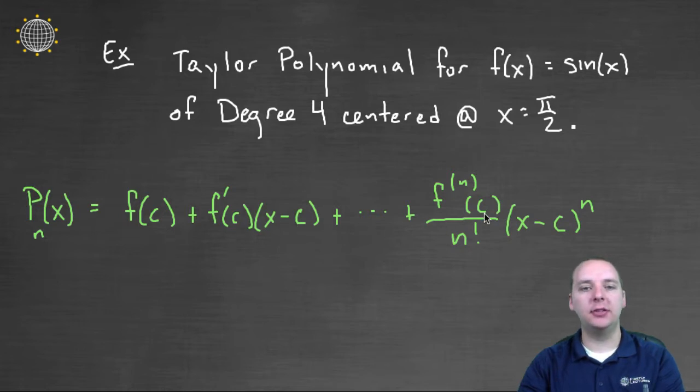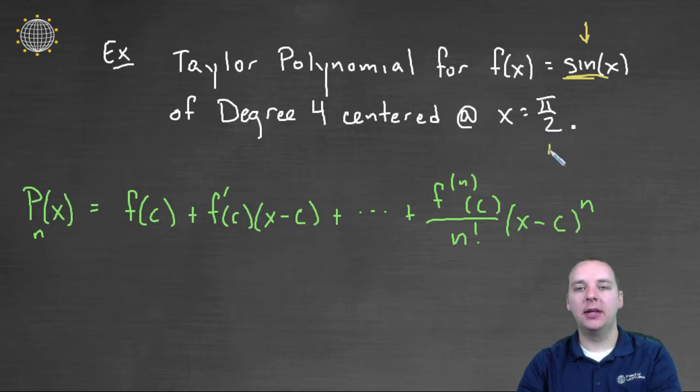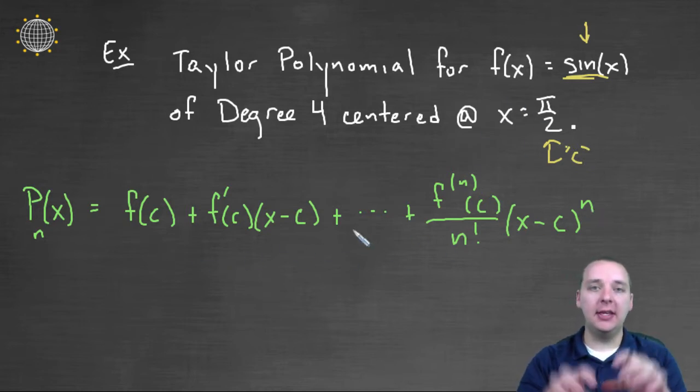The big thing to remember is the formula for Taylor polynomials. If you don't already have this memorized, make sure to commit this to memory because it will be very important. We have f, f prime, f double prime, f triple prime, and we're going to use the sine function as our f. Our center is at pi over two, that's the c. We're going to find all these necessary things and stick them in.